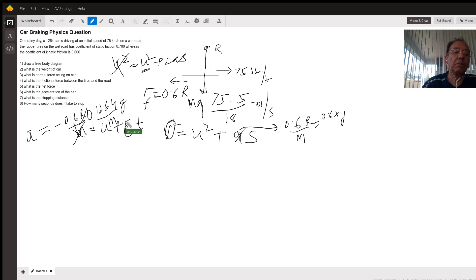To find the stopping distance, use v² equals u² plus 2as. With v² being zero and u being 75 kilometers per hour, this gives u² equals negative 2as, where a is the deceleration.